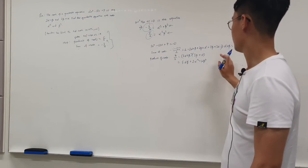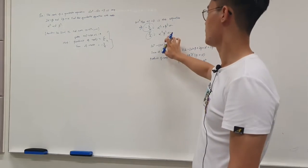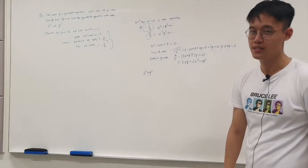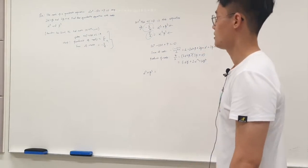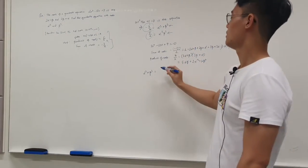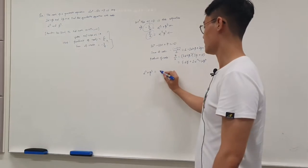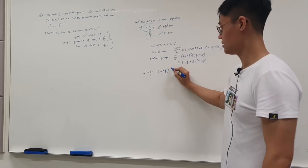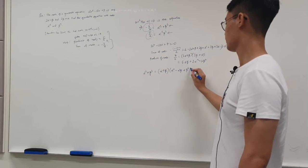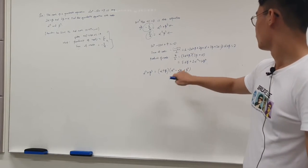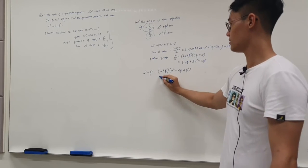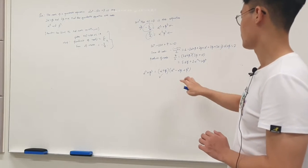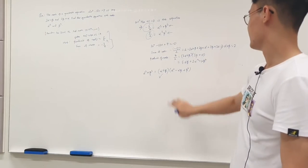So now what we want to find is α³ + β³ and α³β³. Let's start with α³ + β³. This is actually very difficult to find directly. One trick is to use factorization: α³ + β³ = (α + β)(α² − αβ + β²). We have α + β = 2, so we now need to find α² − αβ + β², which is very complex.